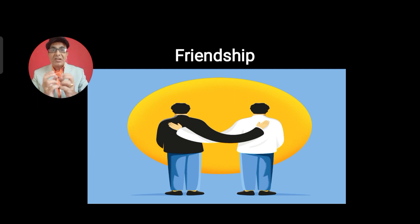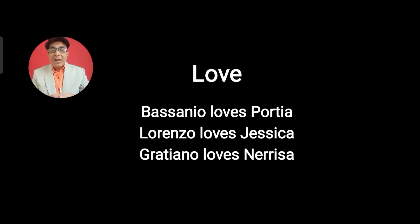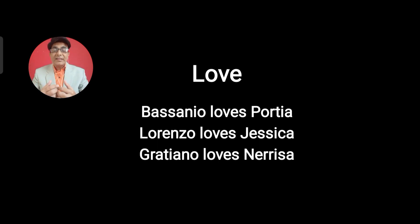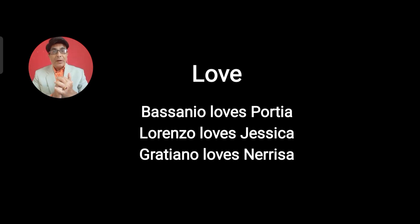Shakespeare has also presented the importance of friendship in life. Antonio and Bassanio are portrayed as very good friends, and Antonio helps his friend Bassanio by putting his own life at risk. This is how Shakespeare presents the theme of friendship through these two characters.